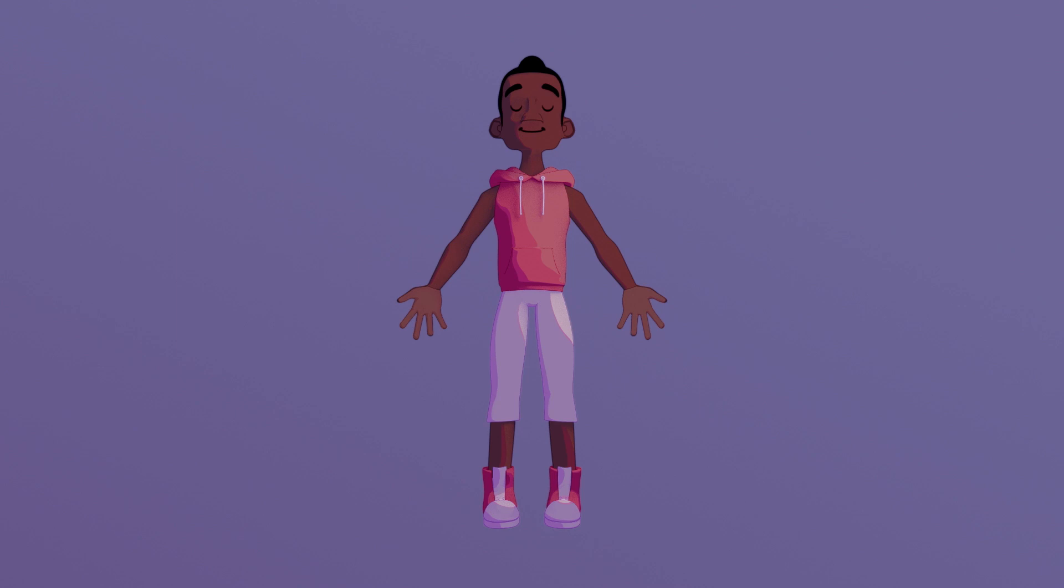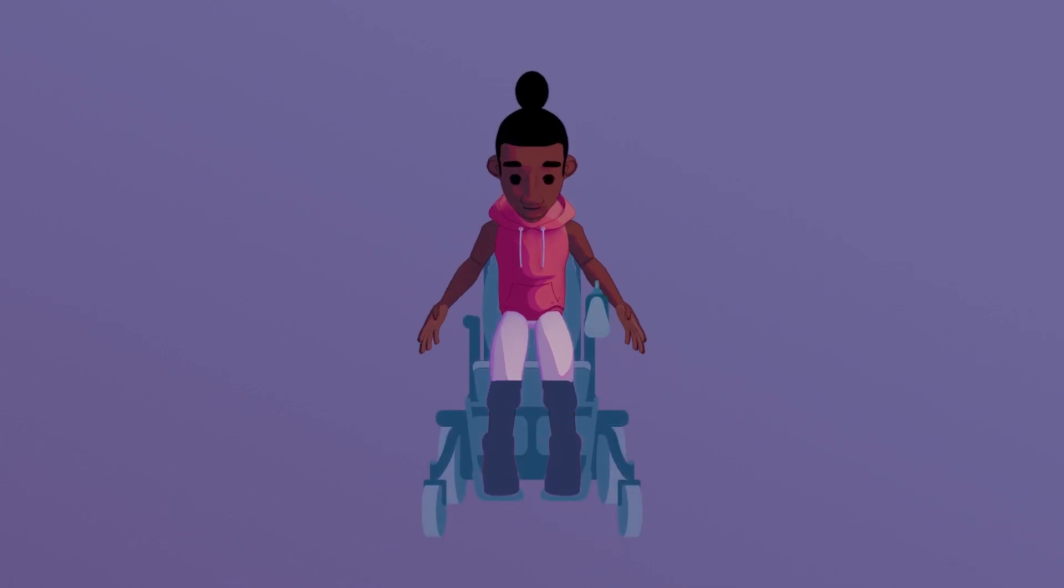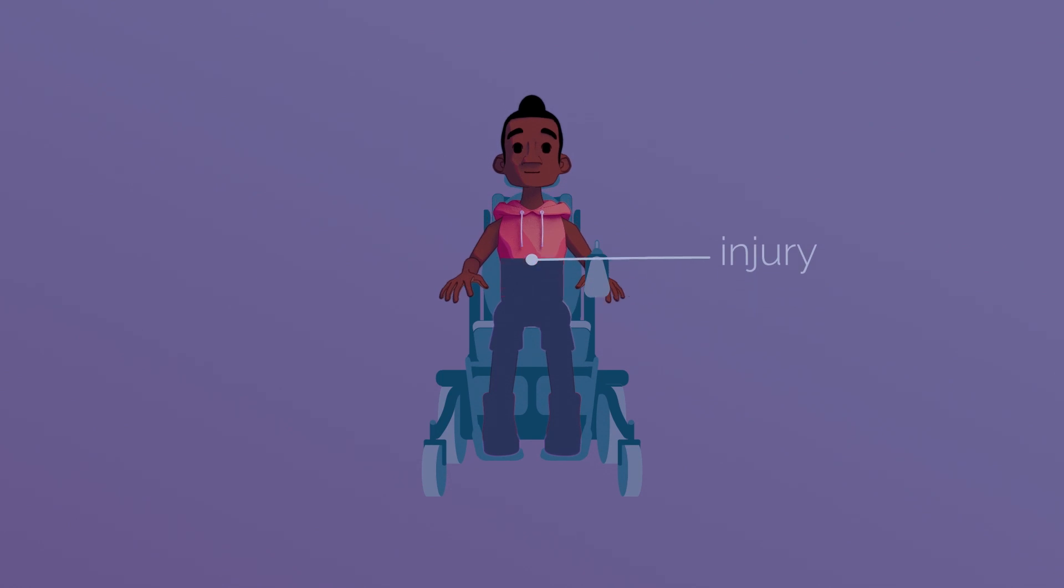Injury to the spinal cord breaks these connections between the brain and the muscles. The higher up the spinal cord injury is, the more muscles will be affected and won't receive messages from the brain.